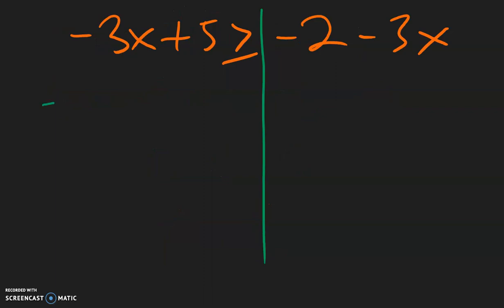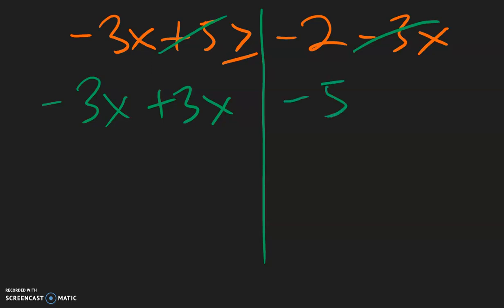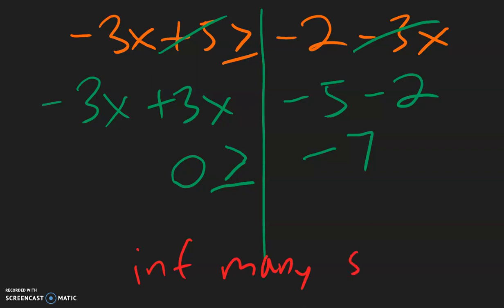For this example, this negative 3x stays over here. This negative 3x needs to move to the left side, so negative becomes positive 3x. Now for the regular numbers, this 5 needs to move, so positive 5 becomes negative 5. And this negative 2 stays the same. So negative 3 plus 3 is 0. Negative 5 minus 2 is negative 7. Copy down the inequality symbol. So what we have is 0 is greater than or equal to negative 7, which is always true because 0 is greater than negative 7. So this is infinitely many solutions.